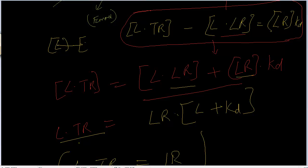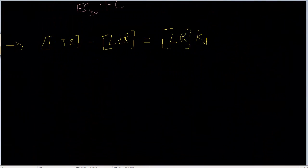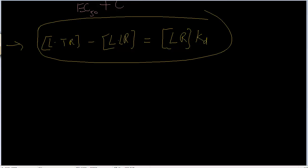So L times TR minus L times LR is equal to LR times KD. I'm going to use this equation to linearize the equation. All we are trying to do is convert this equation into Y equals MX plus B, a linear regression equation.